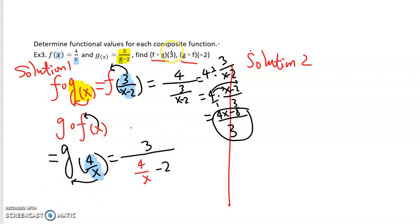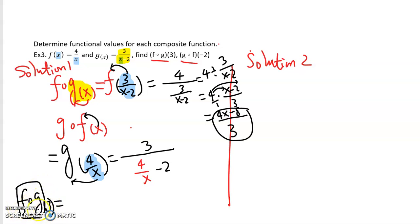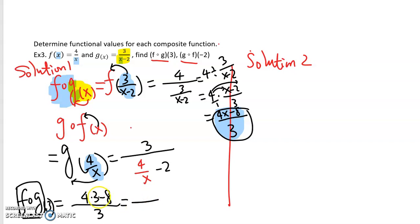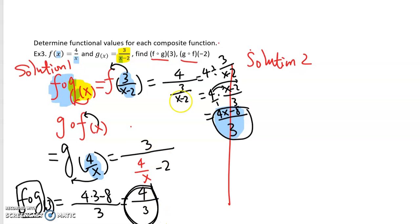Now I'm going to plug 3 into the f∘g composite function. So f∘g(3) means plugging 3 into the f∘g function — we consider f∘g as one function and replace x with 3. That gives us (4 times 3 minus 8) over 3, which is 12 minus 8 over 3, equal to 4/3. So 4/3 is the answer for the first question.